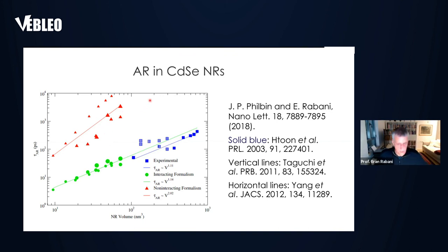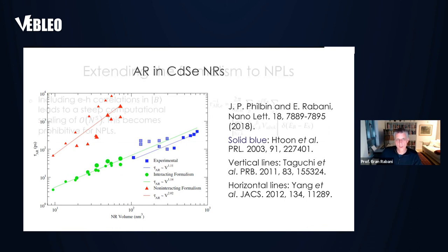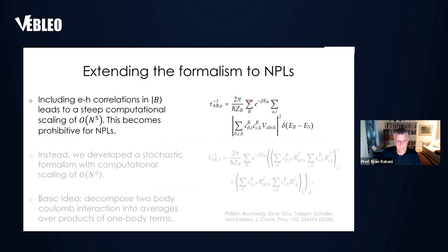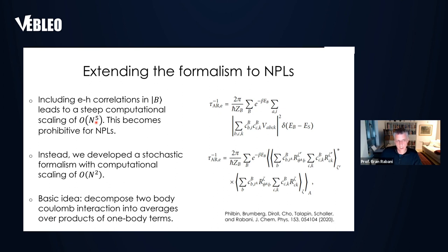The challenge for us was to extend our methods to describe even larger systems. We have done this through a stochastic formalism. Instead of doing things at O(N⁵) scaling, we can do things at O(N²) scaling, making calculations of bigger systems much more affordable.